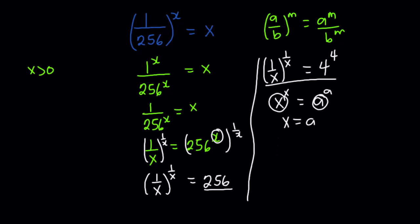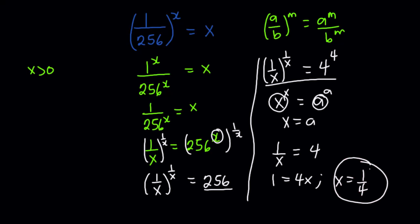Since 1/x is raised to itself and 4 is raised to itself, we can say that 1/x = 4. Making x the subject gives us 1 = 4x, and therefore x = 1/4. So the value of x is 1/4.